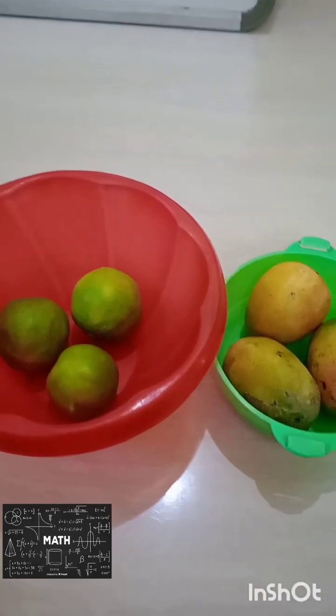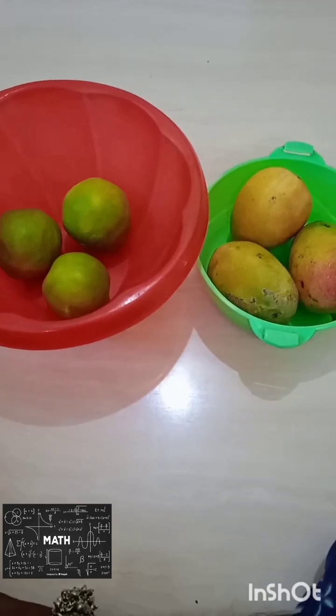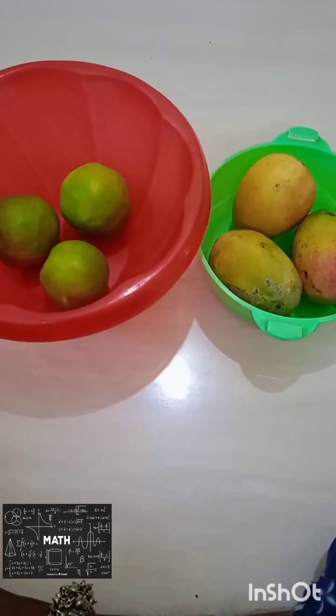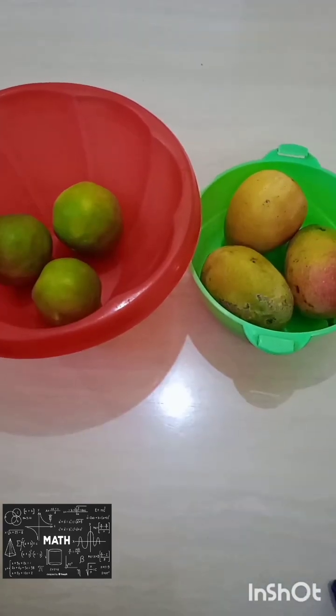Equivalent set. Here two sets are given. The number of oranges is 3. The number of mangoes is 3. Both have the same number of elements, so it is an equivalent set.